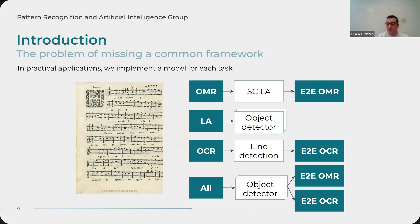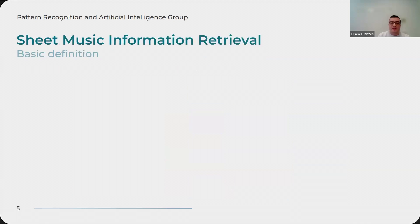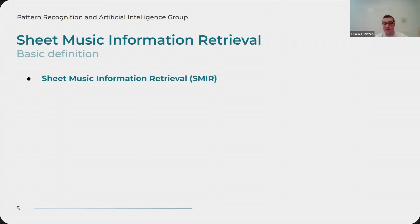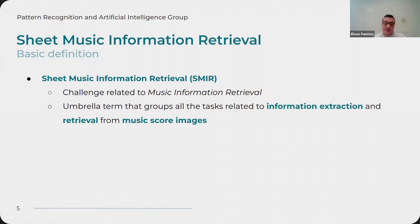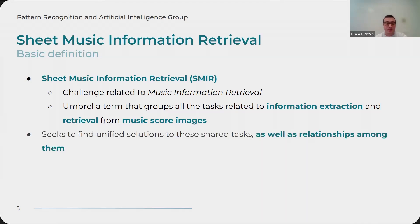This gets hard to develop in practical applications. So we came up with the Sheet Music Information Retrieval concept — by the abbreviation SMIR. It is a challenge related to music information retrieval that, in the same way as document understanding for transcription of documents, we wanted to address as an umbrella term that groups all tasks related to information extraction and retrieval from music score images. The SMIR challenge seeks to find unified solutions to these shared tasks, as well as the relationships among them and the shared information that can help perform better on all of them.